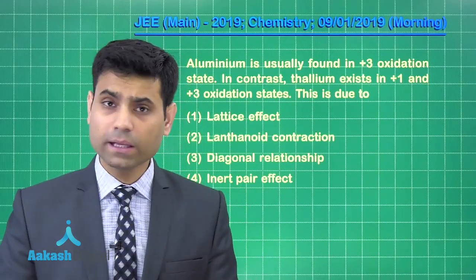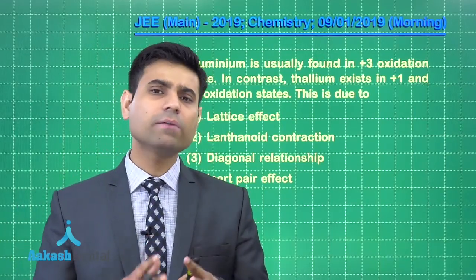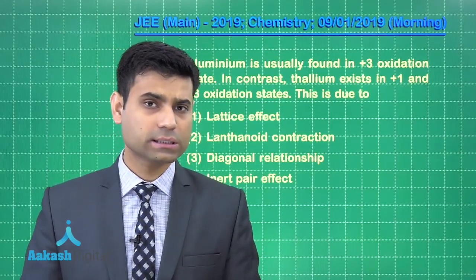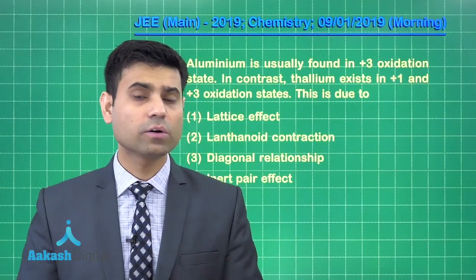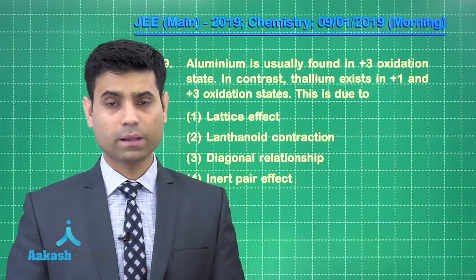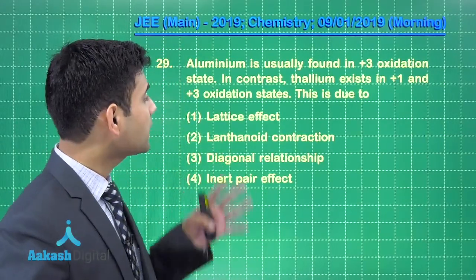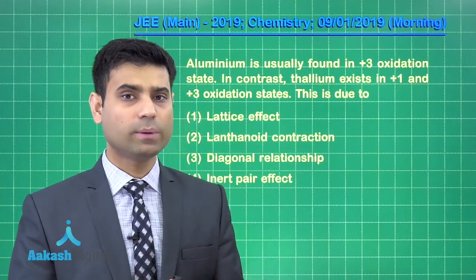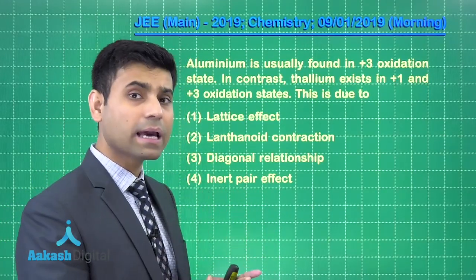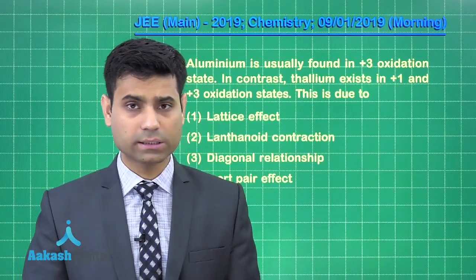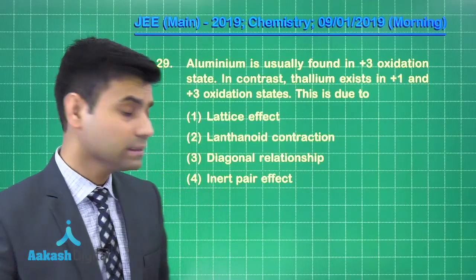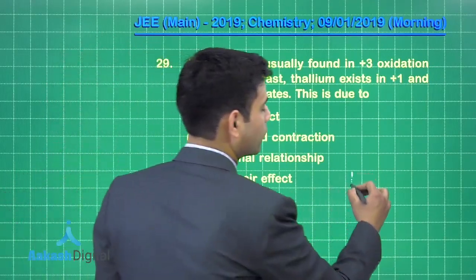Similarly, for 15th group, the stability of +5 oxidation state decreases down the group while that of +3 oxidation state increases down the group because of inert pair effect. That is why in this case we can say that +3 oxidation state is stable in aluminum while for thallium we have +3 and +1 oxidation state. This happens due to inert pair effect. Hence the correct answer for this question is option 4.